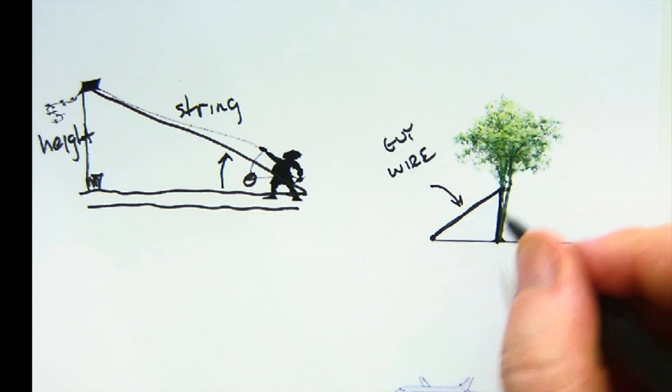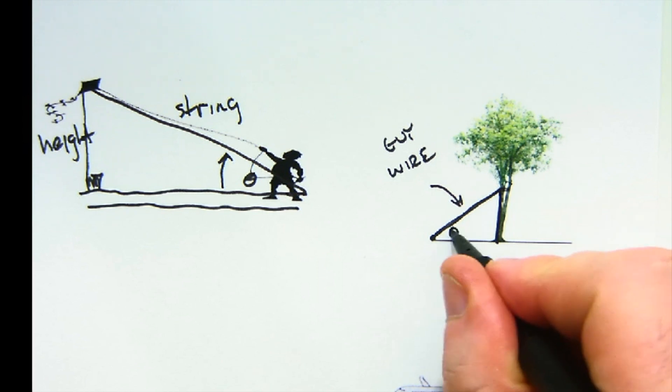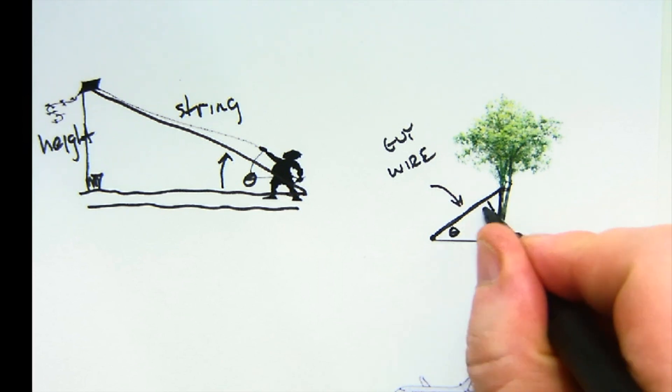This, of course, would be the height. The guy wire is tight here, the angle the guy wire forms with the ground, the angle the guy wire forms with the tree, and so on. We make an assumption that trees grow perpendicular here.